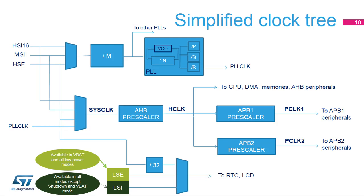The APB clocks, called PCLK1 and PCLK2, are generated by dividing the AHB clock by programmable pre-scalers. The RTC and LCD clock is generated by the low-speed external 32.768 kHz oscillator (LSE), the low-speed internal 32 kHz RC oscillator (LSI), or the HSE divided by 32. The LSE can remain enabled in all low-power modes and in VBAT mode. The LSI can remain enabled in all modes except shutdown and VBAT modes.